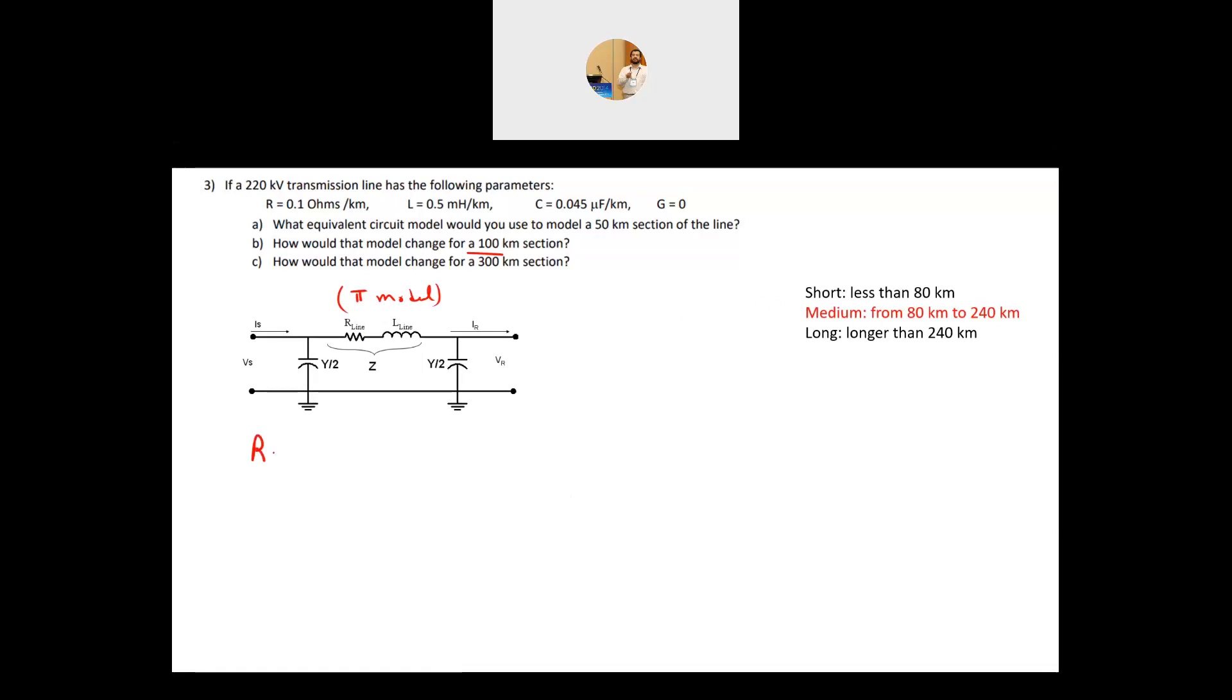Now here we will have R L and Y over 2. So your R here is basically equal to 0.1 ohms per kilometer times the 100 kilometer, which is equal to 10 ohm. Your L is equal to the 0.5 times 10 to minus 3 Henry per kilometer times the 100 kilometer. So this will cancel with that, and this will give me 0.05 Henry, and from this your X of the line, X is equal to omega times L, 2 pi F times L, and this will give me 18.85 ohms.